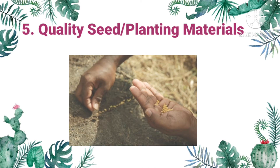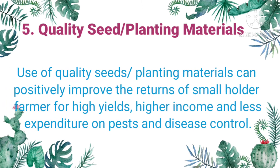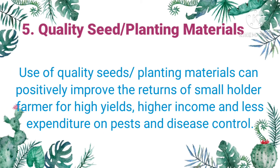The 5th pre-cultural practice is the use of quality seeds or planting materials. Do you use recommended quality planting materials with one or more of the following characteristics: disease resistance and tolerance, high yielding, early maturing, better taste, size, and longer shelf life? The use of quality seeds or planting materials can positively improve the returns of smallholder farmers through high yields, higher income, and less expenditure on control of pests and diseases.